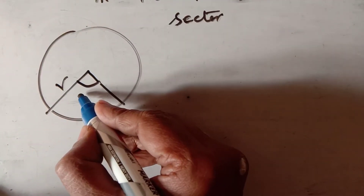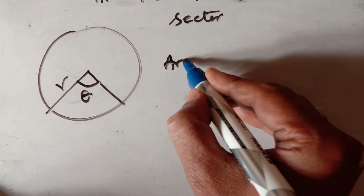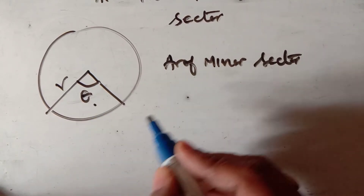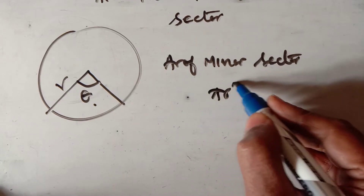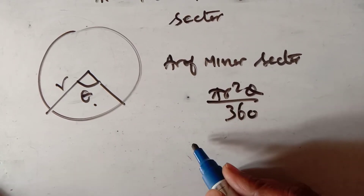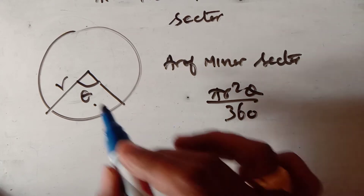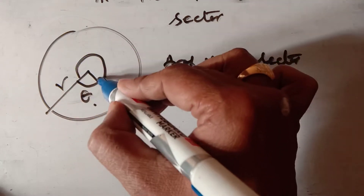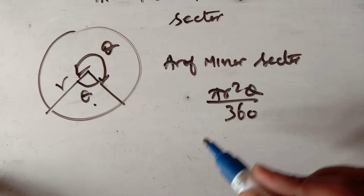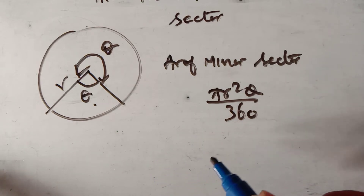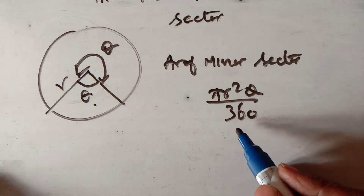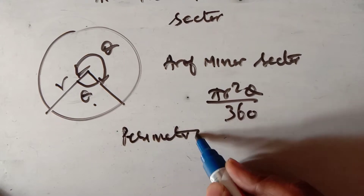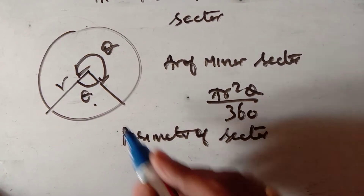Now the area of the minor sector: if the radius is r and the angle is theta, the area of the minor sector is πr²θ/360, where theta is the angle bounded by the two radii. To find the area of the major sector, find the area of the minor sector and subtract it from the area of the circle.